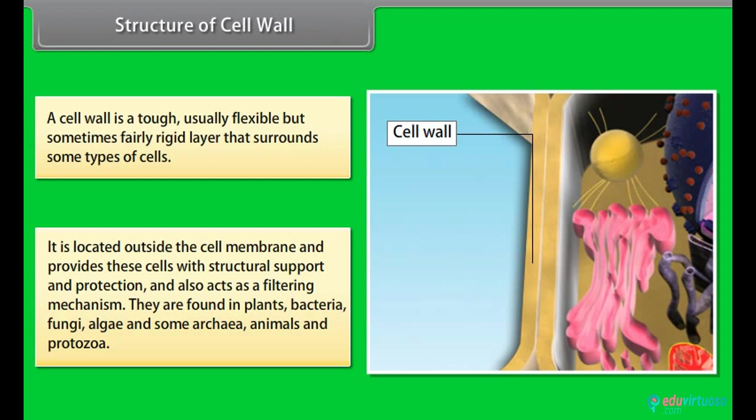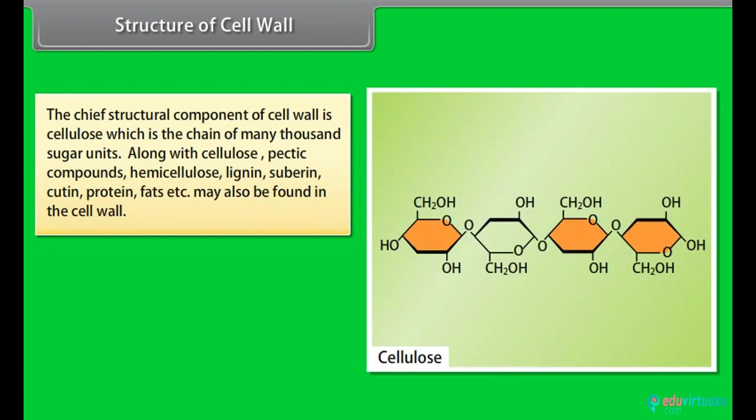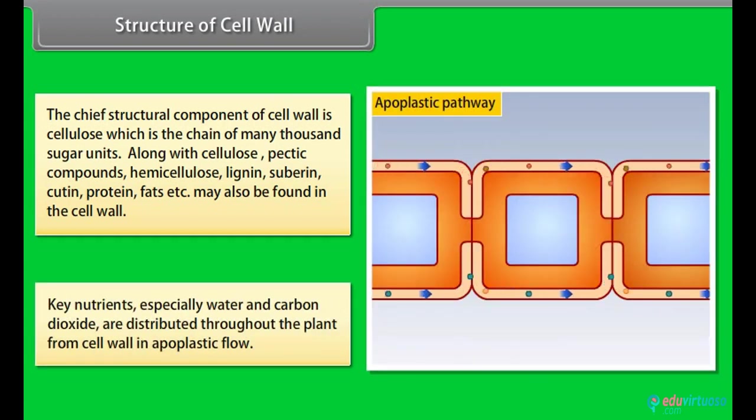The chief structural component of cell wall is cellulose, which is the chain of many thousand sugar units. Along with cellulose, pectic compounds, hemicellulose, lignin, suberin, cutin, protein, fats, etc. may also be found in the cell wall. Key nutrients, especially water and carbon dioxide, are distributed throughout the plant from cell wall in apoplastic flow.